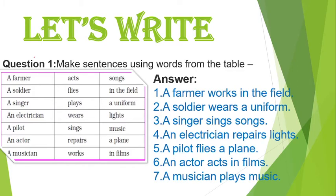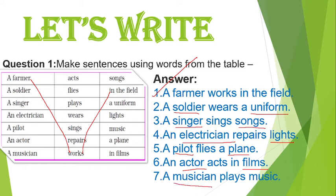A farmer works in the field, so you match with work and in the field, and then you make this type of sentence. A soldier wears a uniform. A singer sings a song. An electrician repairs the light. A pilot flies a plane. An actor acts in a film. A musician plays music.